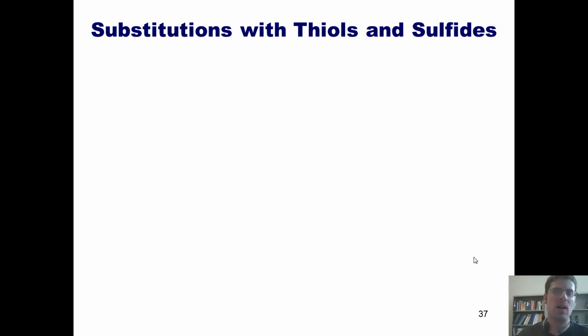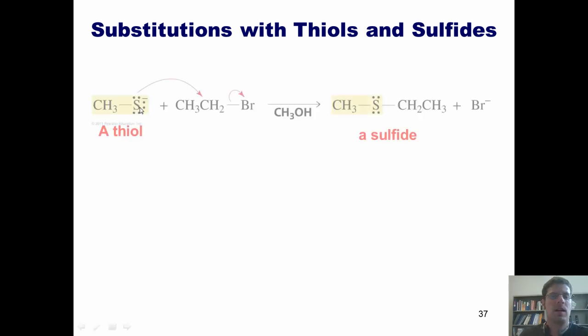This molecule right here, that is, if this sulfur was attached to a hydrogen instead of it having a negative charge, would be called a thiol. When I remove that hydrogen with a base and replace it with a negative charge, this charged sulfur compound called a thiolate can act as a nucleophile to attack a carbon on an alkyl halide and kick off the halogen itself. That forms this type of molecule in which the sulfur is bonded to two alkyl groups, which is called a sulfide.